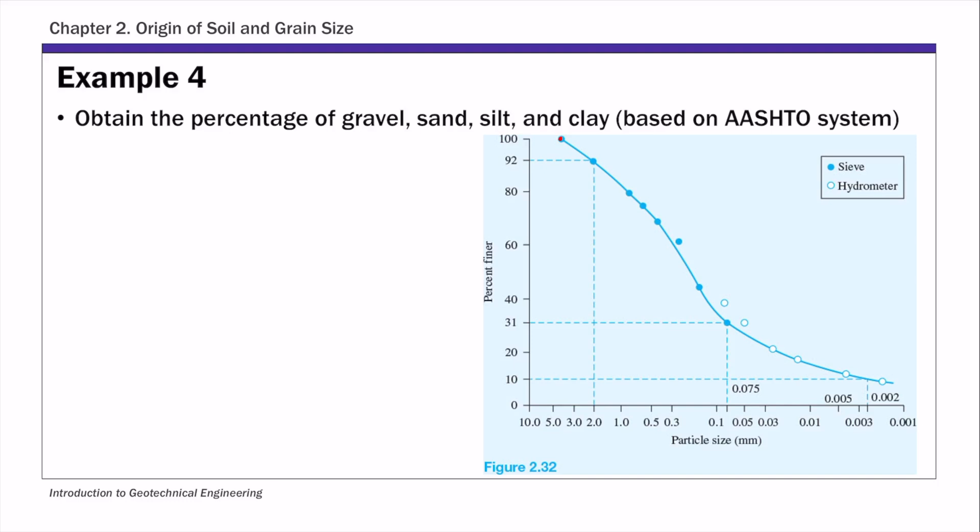This is example 4 of chapter 2. For this example you are asked to obtain the percentage of gravel, sand, silt and clay based on AASHTO system.